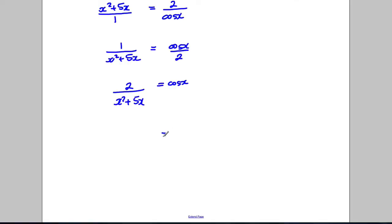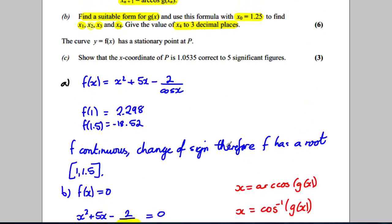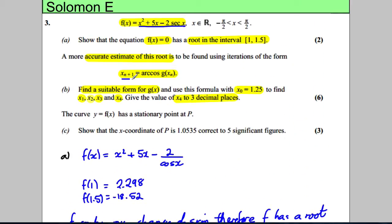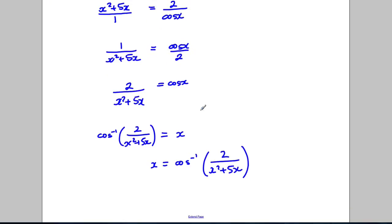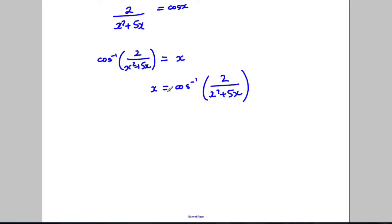So what I'm going to do is I'm going to say that x is therefore the inverse cosine of 2 over x squared add 5x. Now that is of the form that we were asked for in the question. x is the subject of the formula. We have an inverse cos and then we have some function of x. So I found this g of x here and then I'm going to do exactly what they told me to do. I'm going to say that's n plus 1 and that's n there.